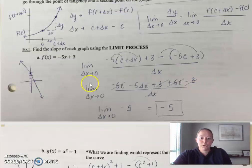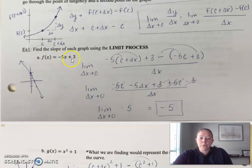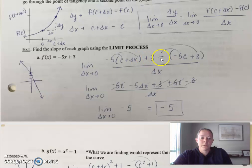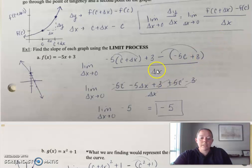Let's try it. Limit as Δx approaches 0. We'll use our function: negative 5 times (C + Δx) + 3, minus f(C), so plug C in, all over Δx.